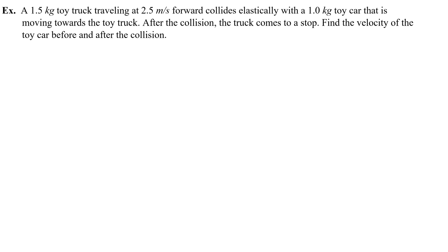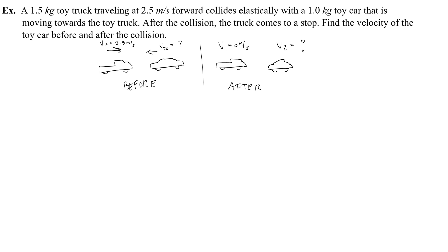Now let's try an example problem using the elastic shortcut. A 1.5 kilogram toy truck traveling at 2.5 meters per second forward collides elastically with a 1 kilogram toy car that is moving towards the toy truck. After the collision, the truck comes to a stop. Find the velocity of the toy car before and after the collision. Hopefully this drawing helps you see that the two objects are moving towards each other in the beginning; they collide, the truck comes to a stop, and there's some unknown velocity of the car afterwards. I'll use V1 and V2 to keep track of variables.